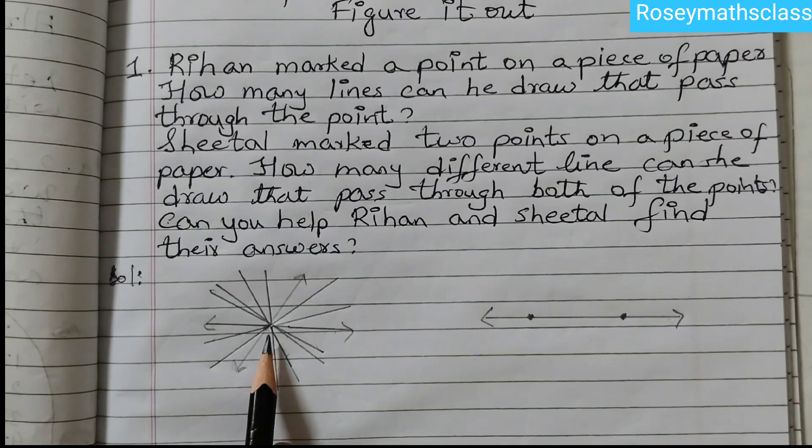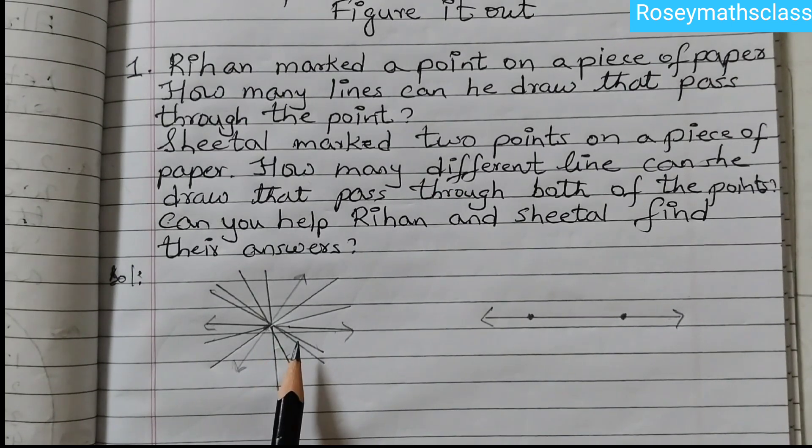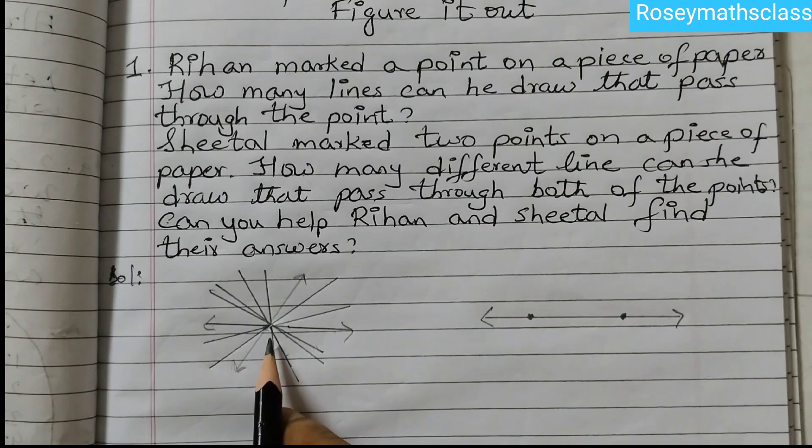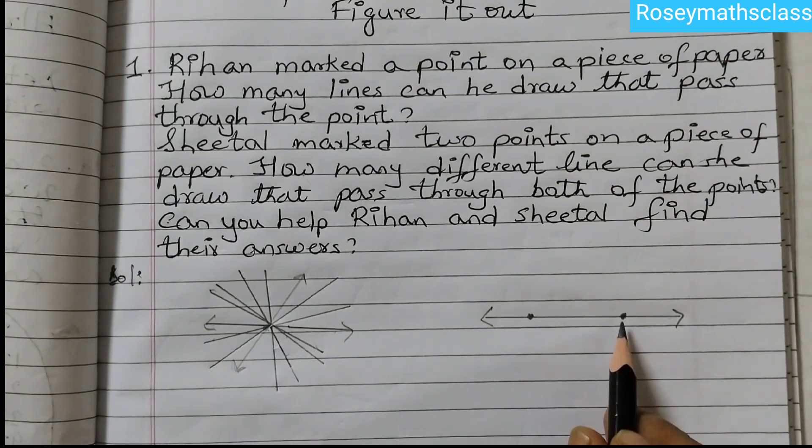First one, when only one point, a single point is there, we can draw many lines, countless lines or we can say infinite number. Infinite means we cannot count. Infinite number of lines. And when we have two points, there is just one line passing through the point. Hope that's clear to you. Thank you.